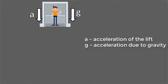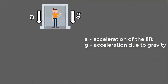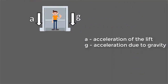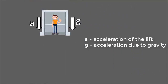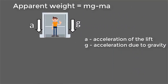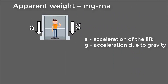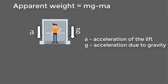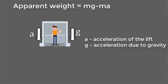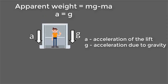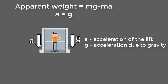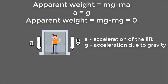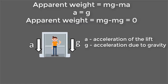For an object with an acceleration a falling down under gravity, the apparent weight equals mg minus ma. If the object accelerates with an acceleration of g, then the apparent weight will also become zero.